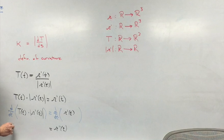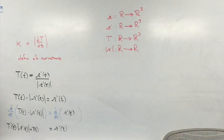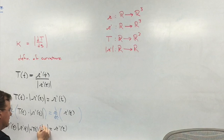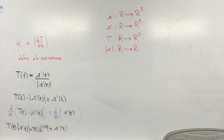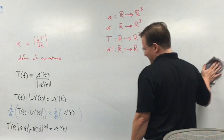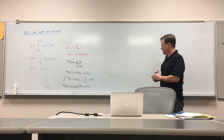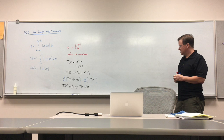Using the product rule, the left side gives T prime of t times the magnitude of R prime of t, plus T of t times the derivative of the magnitude of R prime of t. And you've got to be careful here, because it would be tempting at this step to write R double prime — but that wouldn't be quite right. Mostly because it wouldn't be true.